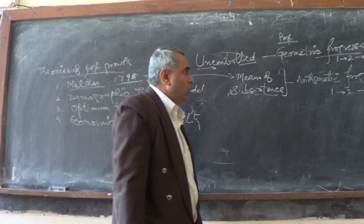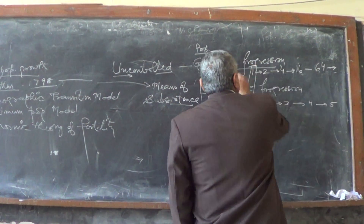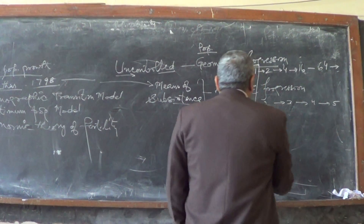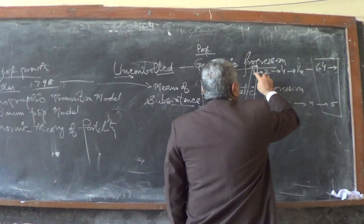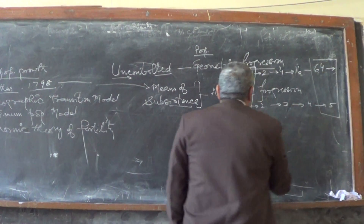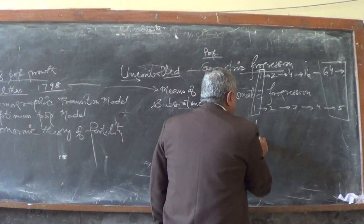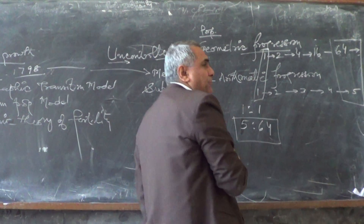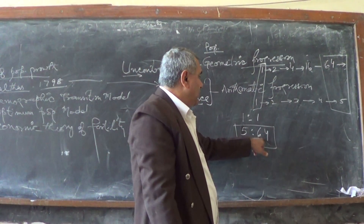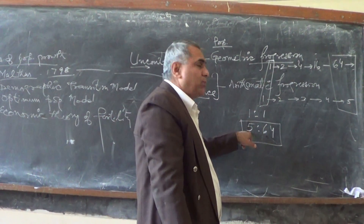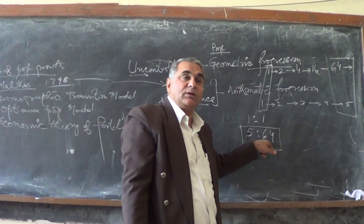In such a condition, over time, there will be a ratio. At the starting it is 1:1, but after some time it becomes 1:64. There will be a great gap in food supply — food supply would be 5 while the population demand would be like 64.